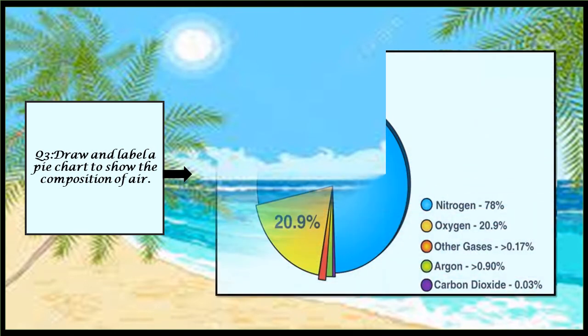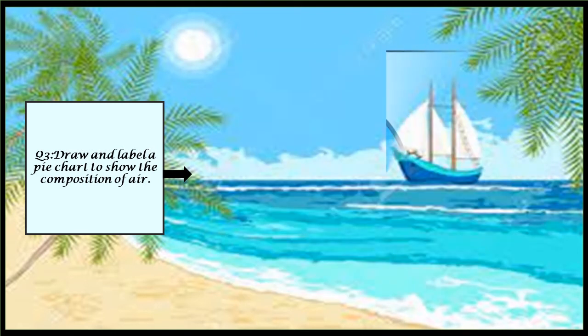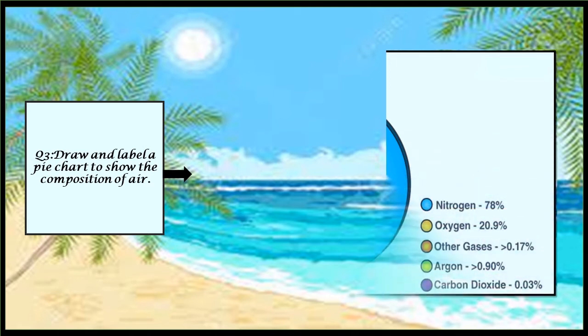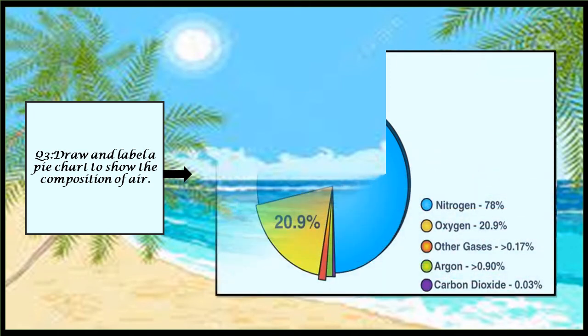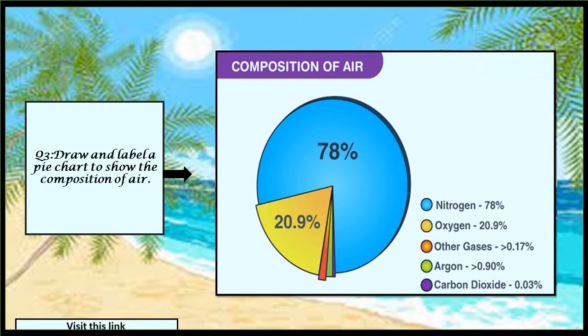My dear students, your project number three is about the composition of air. You have to draw and label a pie chart to show the composition of air. It would be fantastic if you do this work on a paper plate. You can also visit the link below and it will help you a lot.